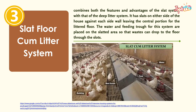Third, the slate floor combined litter system combines both the features and advantages of the slate system with that of the deep litter system. It has slits on either side of the house against each side wall, leaving the central portion as the littered floor. The water and feeding troughs for this system are placed on the slated area so that waste can drop to the floor through the slots.